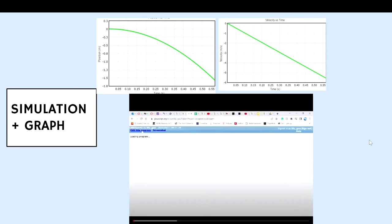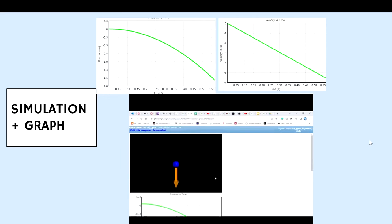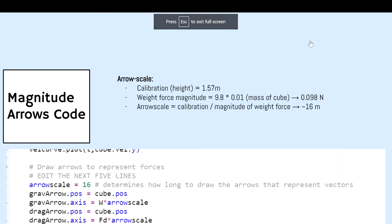Here's the simulation and graph. Here we note that the velocity time graph is somewhat linear but the velocity is not constant. Here's the protocol to get the magnitude arrows.